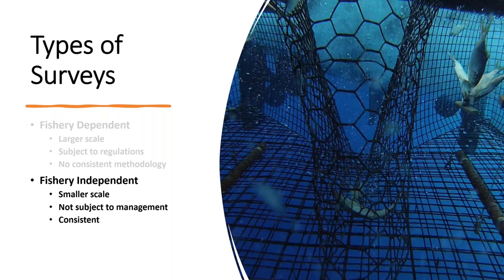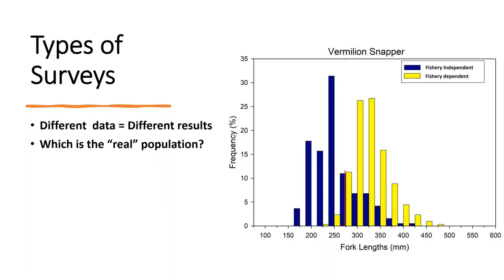The second type is a fishery-independent survey. As the name implies, it's not dependent on the fishery, so it's not subject to management regulations. This theoretically allows a more complete picture of the entire population, not just those individuals that fit within those regulations. Fishery-independent surveys can collect undersized fish, theoretically go over the bag limit, use restricted gear, and sample during closed seasons or areas — all done in a consistent manner that helps eliminate outside factors from affecting the results.